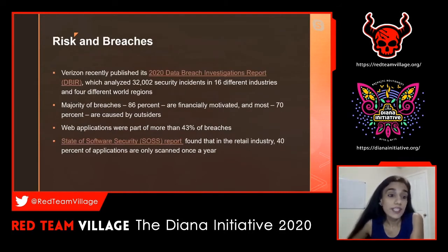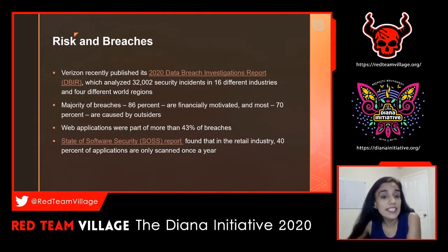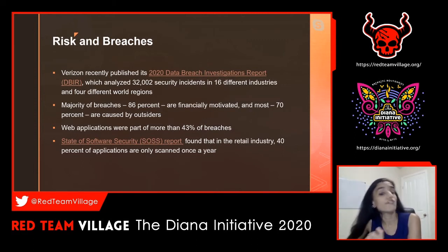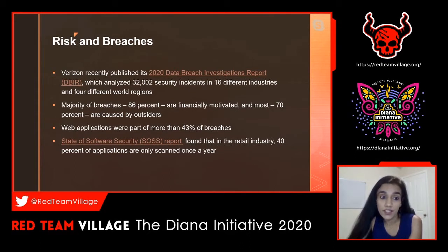Let's talk about some stats. Verizon recently published its 2020 Data Breach Investigation Report, the DBIR report, which analyzed 32,000 security incidents in 16 different industries and four different world regions. The majority of these breaches—86% of them—are financially motivated. Most, 70%, are caused by outsiders. Most importantly, web applications were part of more than 43% of breaches, more than double the amount from last year.